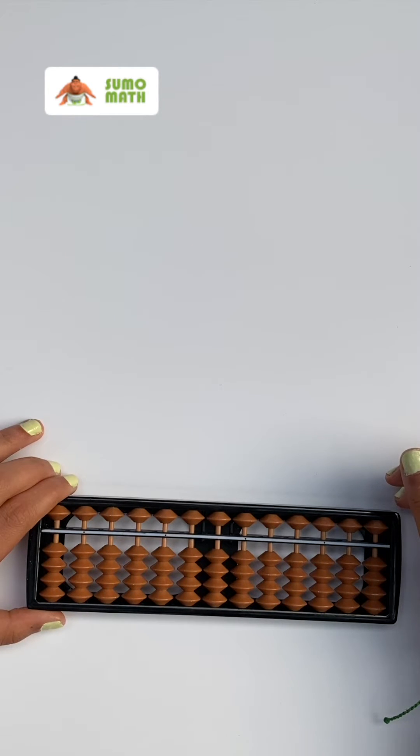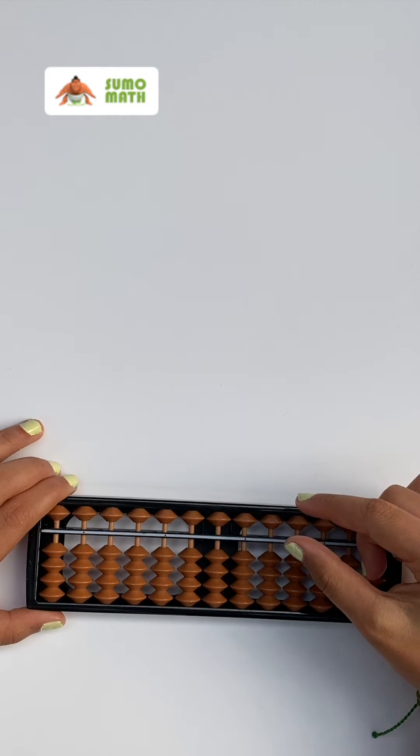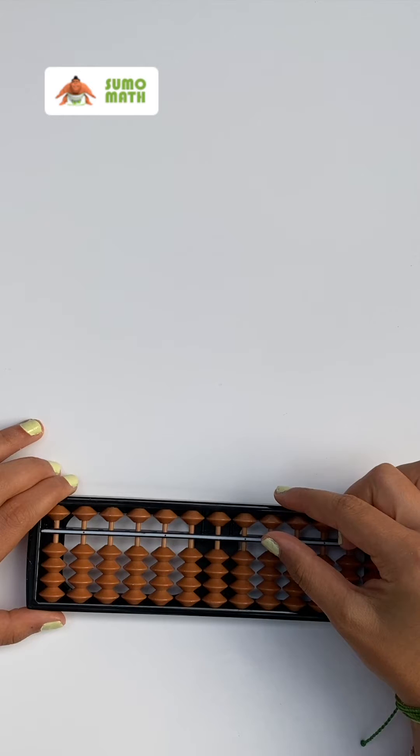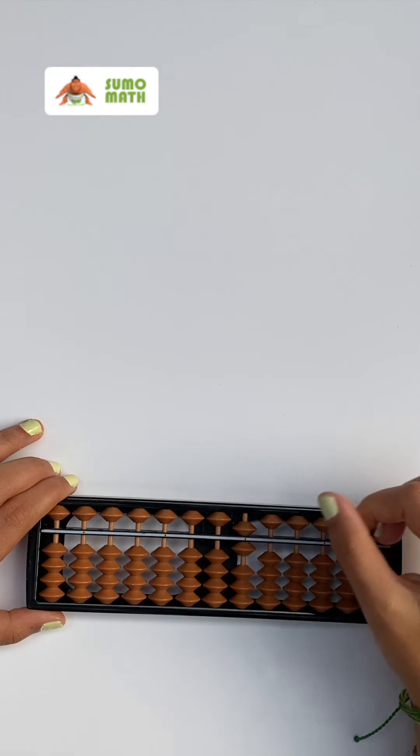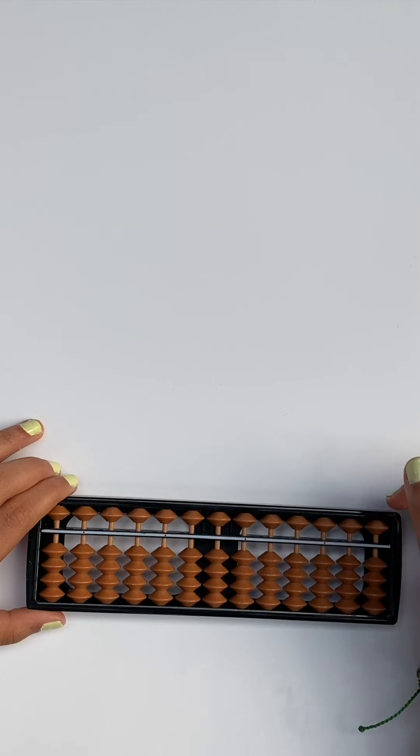To add 6, we will pinch the top 5 bead with one lower bead to the reckoning bar using both our thumb and index finger. Another option to do this is using only your index finger, like so.